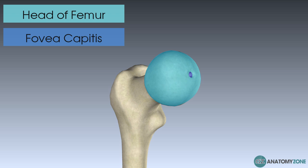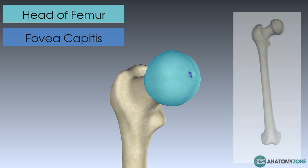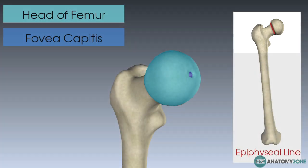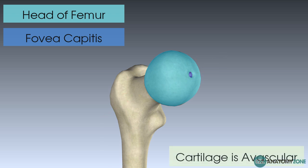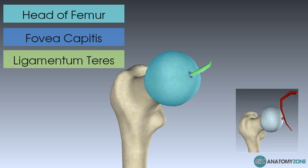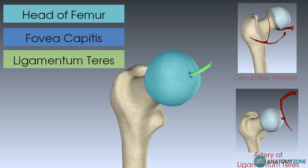The fovea capitis has an important role in blood supply in childhood. When you were a child, the head and neck of the femur are separated by the cartilage of the epiphyseal line, which is your growth plate. Because that cartilage is avascular — it doesn't have blood vessels running through it — you need two blood supplies. Arteries supplying the head come through the ligamentum teres via a branch of the obturator artery, and the neck of the femur is supplied by the circumflex arteries coming off the femoral artery.